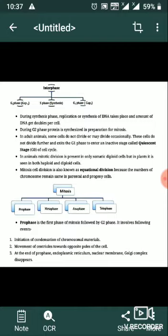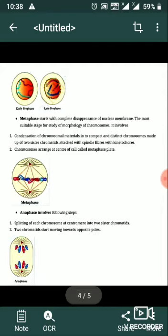Initiation of condensation of chromosomal material. Movement of centrioles to opposite poles of the cell. At the end of prophase, the endoplasmic reticulum, nuclear membrane, and Golgi complex disappear. This occurs through early prophase and late prophase.